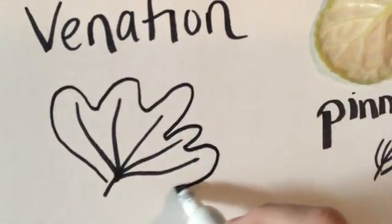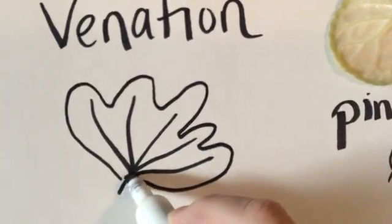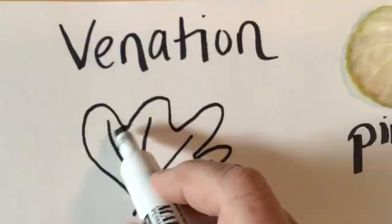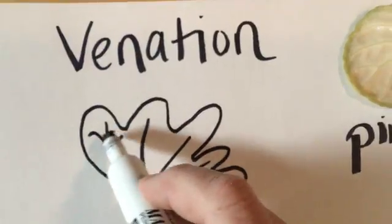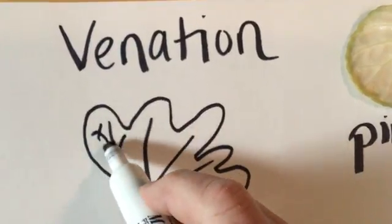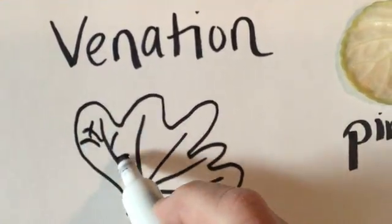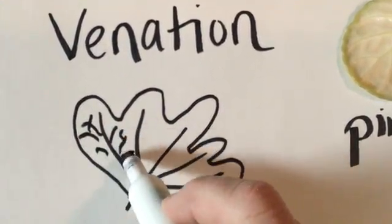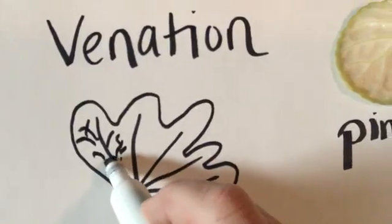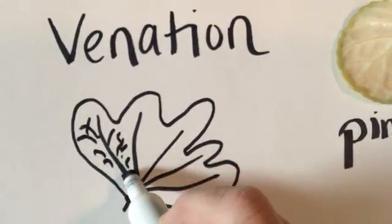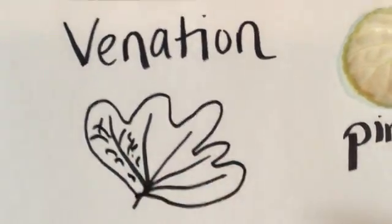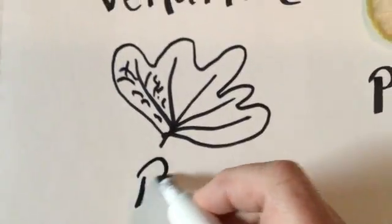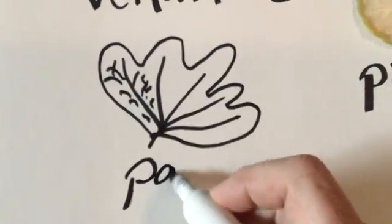They say palmate because it looks like the palm of your hand, and each one of these veins will have further veins coming off of it like so. This one is called palmate.